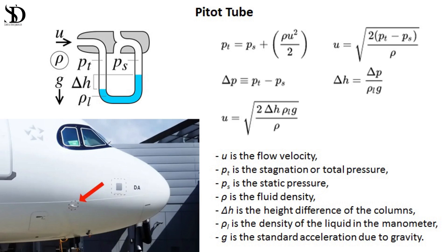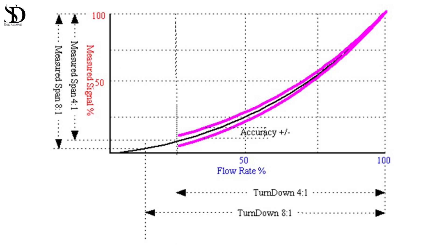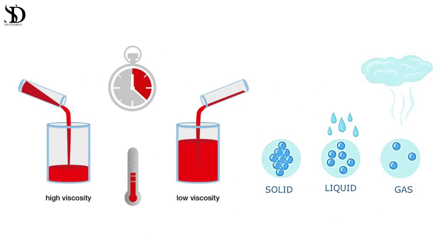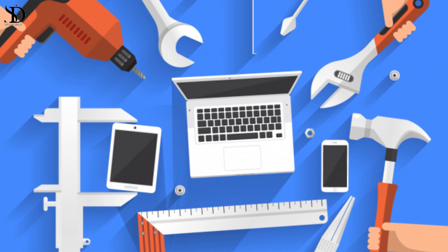Pitot tubes operate based on the principle of measuring the dynamic pressure of a flowing fluid. They are often used in aerospace and hydraulic engineering for measuring airspeed and fluid flow velocities. Considerations for selection: accuracy requirements - determining the necessary level of accuracy is crucial when choosing between these flow meters. Fluid characteristics: different fluids may require specific flow meter designs to ensure accurate measurements. Cost and maintenance: initial investment, installation, and maintenance costs should be weighed against the desired performance and longevity.